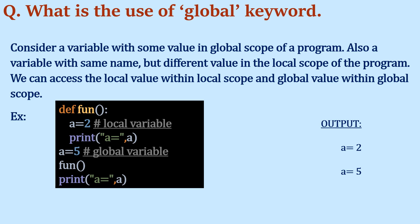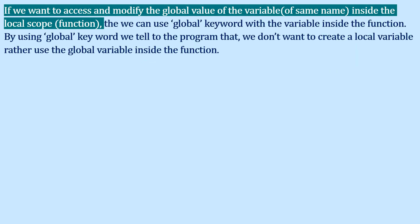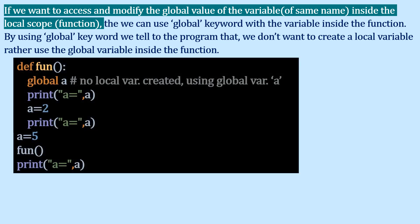Now, what if we want to access and modify the global value of a variable inside a function? In that case we have to use the 'global' keyword with the variable inside the function. By using the global keyword, we tell the program we don't want to create a local variable — instead we want to use the global variable inside the function body.